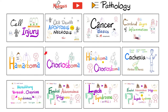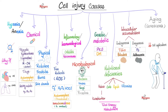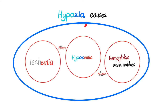Please watch the videos in this pathology playlist in order: cell injury (reversible), apoptosis and necrosis (irreversible). The most common cause of cell injury is hypoxia or anoxia, but that's not the only cause — we have other causes as well. Causes of hypoxia include ischemia, hypoxemia, and hemoglobin abnormalities.